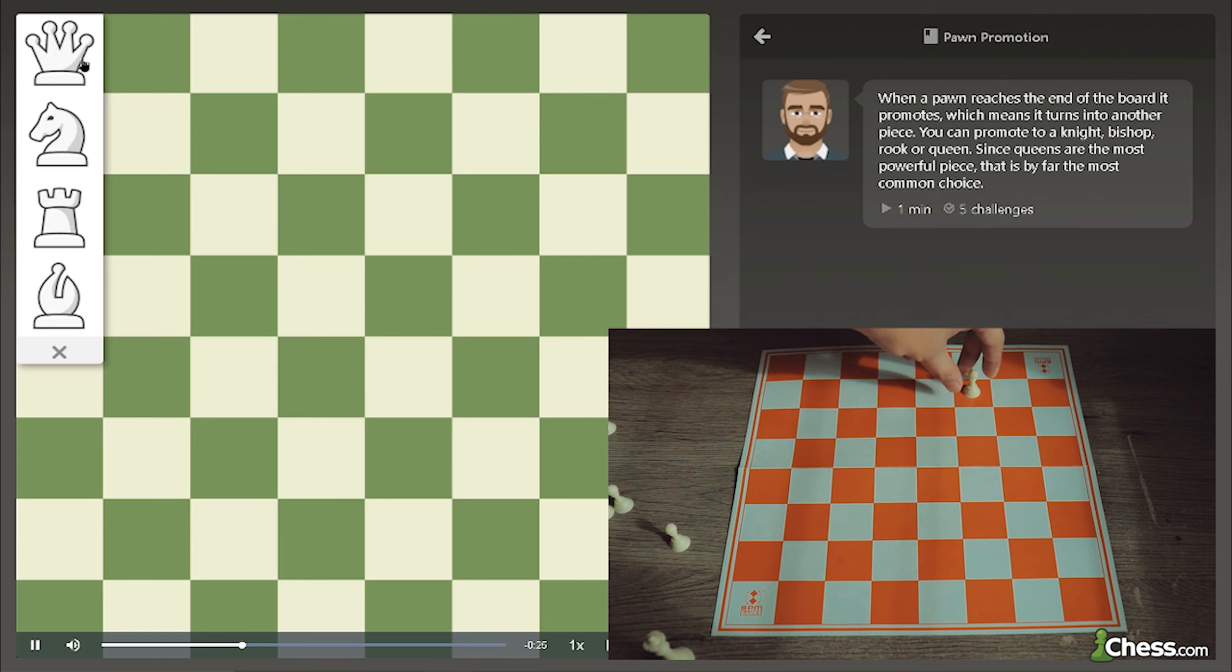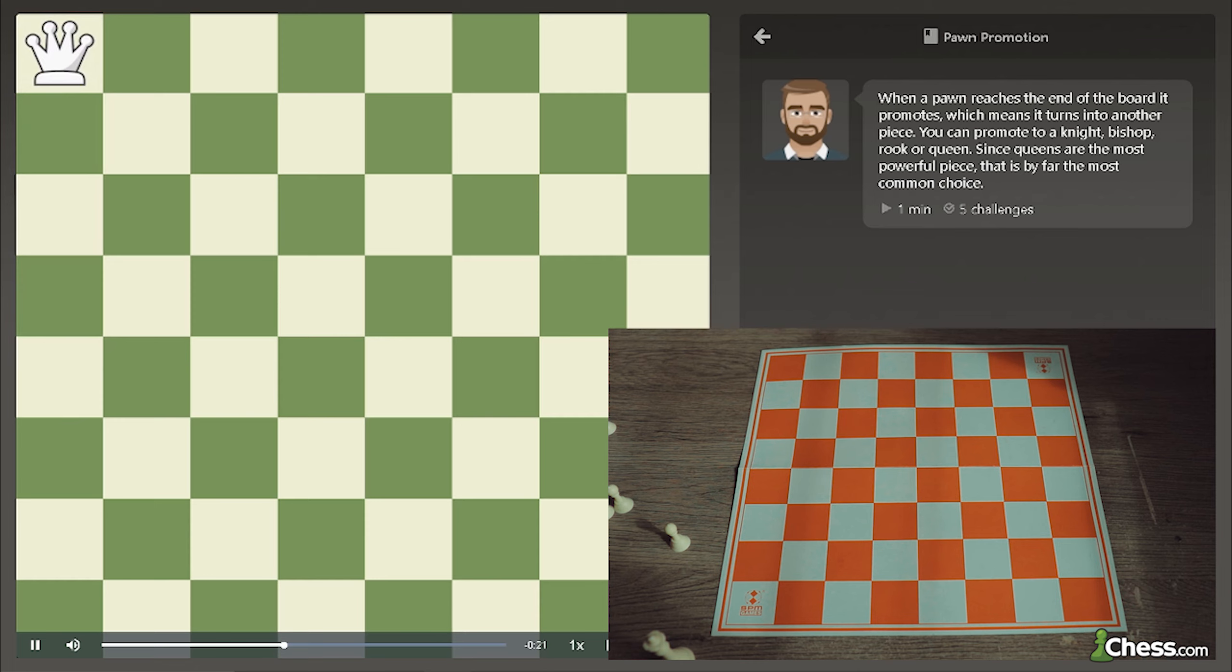It can be a knight, a bishop, a rook, or the powerful queen. It cannot stay a pawn, and it cannot become a king.